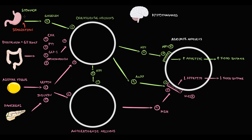Starvation stimulates the stomach to produce ghrelin. With increasing ghrelin production, stimulation of orexigenic neurons increases. With activation, orexigenic neurons begin to produce more neuropeptide Y, which potentiates the stimulation of the NPY receptor, thereby additionally stimulating appetite. Appetite stimulation leads to an increase in food intake. Also, increasing neuropeptide Y production potentiates inhibition of anorexigenic neurons, which leads to decreasing production of melanocyte-stimulating hormone. This results in suppression of appetite inhibition, which leads to a suppression of decreasing food intake.